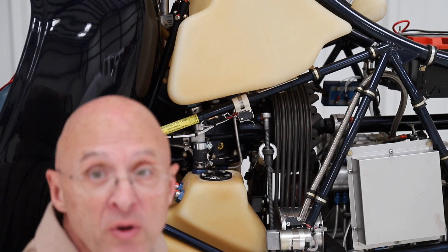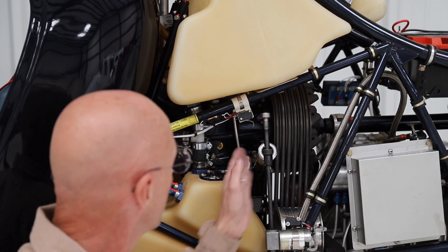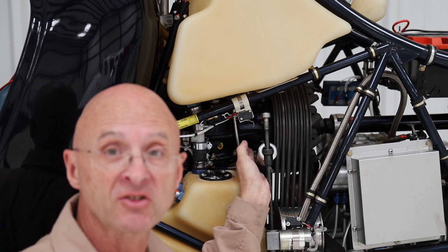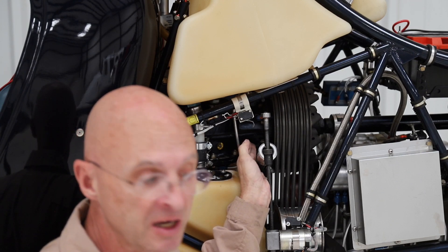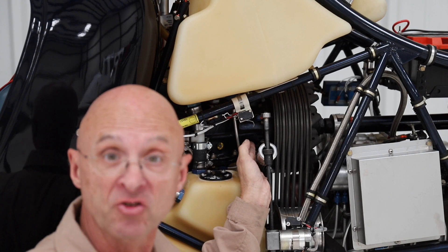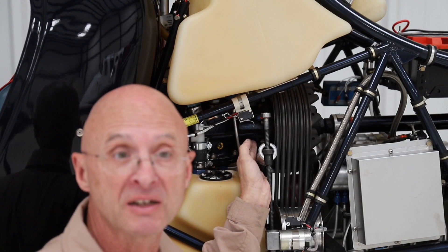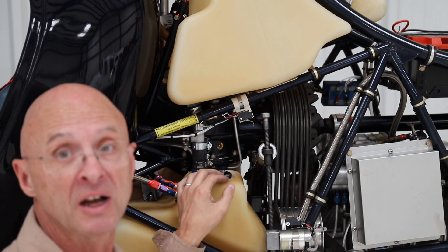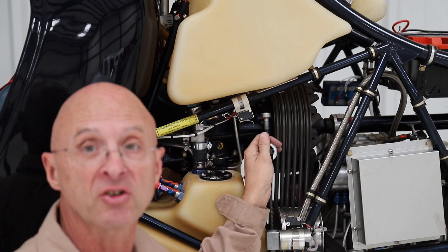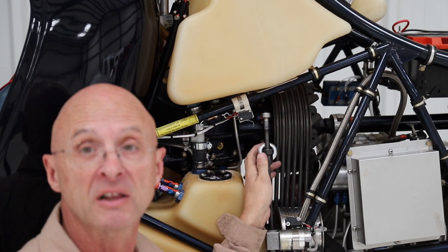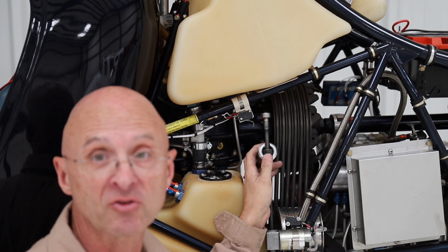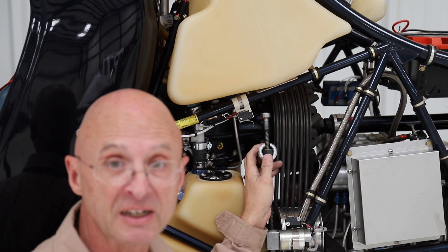Okay, so we have the nut and the washer reinstalled on the bolt that goes through the clevis. We've also taken the time to tighten the jam nut on the clevis itself so that that's all secured using that nine sixteenths wrench. And we've positioned the clutch arm back into the clutch jack screw, and we're going to go ahead now and reinstall those two bolts and give it a try.